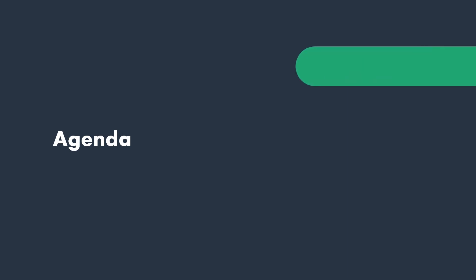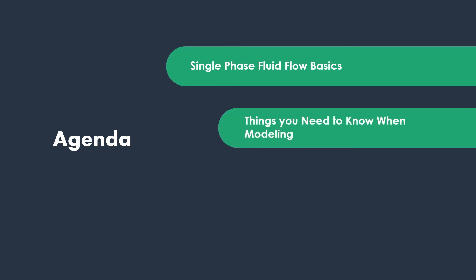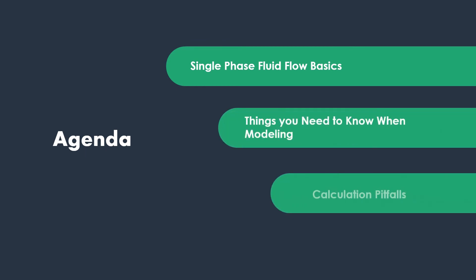I would like to start with the agenda of the training. First, I'll talk about the single phase fluid flow basics, followed by things that you need to know when performing modeling, and also the calculation pitfalls — basically things that can go wrong and how to fix them. These are important because once you understand the single phase fluid flow and the equations that you can use, most of the times the calculations that we generate may not match what's in reality in the field. And there are two major uncertainties in your calculations.